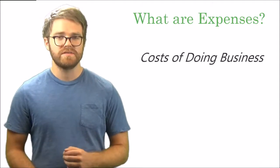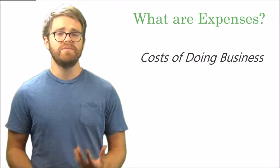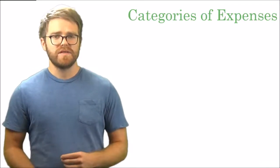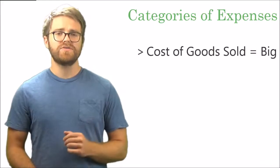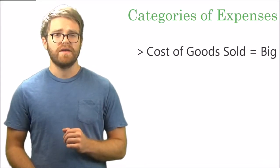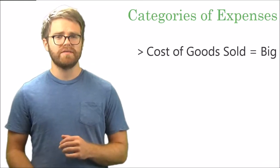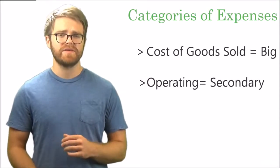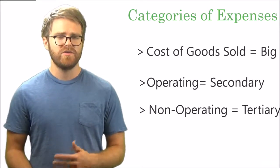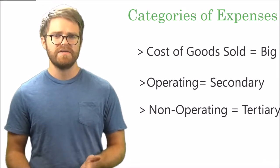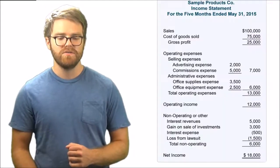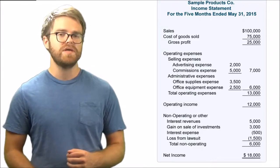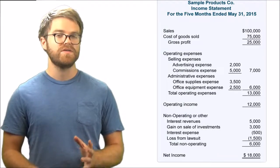Expenses are really just costs of doing business — that's it. There are a lot of different types, so let's talk about what categories of expenses are on the income statement. Cost of goods sold is the biggest one — that's the cost of what you sell. The next category is operating expenses, which is a secondary type, and then non-operating is tertiary, meaning third. Here's the income statement again: cost of goods sold is right below sales.